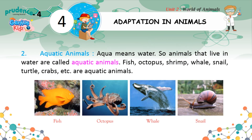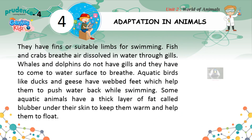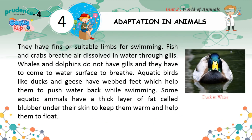Aquatic Animals. Aqua means water, so animals that live in water are called aquatic animals. Fish, octopus, shrimp, whale, snail, turtle, crabs, etc. are aquatic animals. They have fins or suitable limbs for swimming. Fish and crabs breathe air dissolved in water through gills. Whales and dolphins do not have gills and they have to come to the water surface. Aquatic birds like ducks and geese have webbed feet which help them to push water back while swimming. Some aquatic animals have a thick layer of fat called blubber under their skin to keep them warm and help them to float.